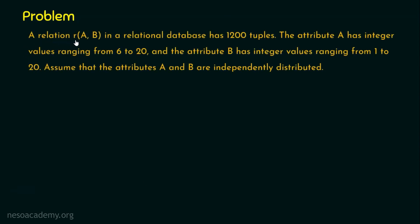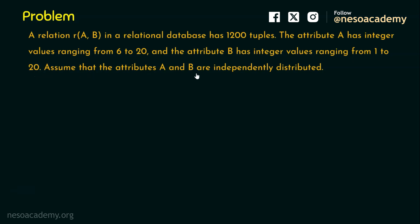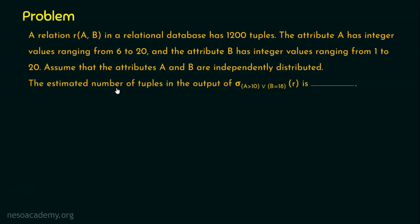A relation R with the attributes A and B — two attributes in a relational database — has 1200 tuples. The attribute A has integer values ranging from 6 to 20, and attribute B has integer values ranging from 1 to 20. Assume that attributes A and B are independently distributed. We are required to find the estimated number of tuples in the output of select from relation R which satisfies the condition A greater than 10 OR B is equal to 18. This question was asked in GATE computer science in the year 2021.